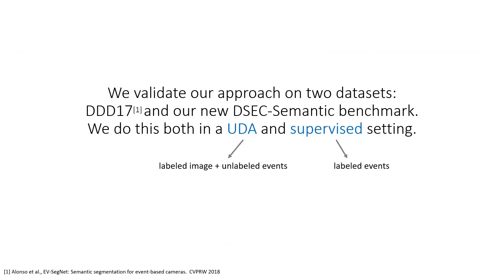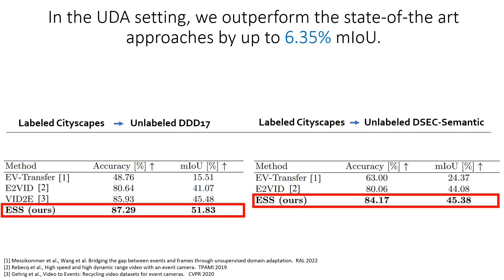We validate our approach for the semantic segmentation task on two datasets: the existing DDD17 and our new DSEC semantic benchmark. In the UDA setting, without access to labeled events during training, our method outperforms state-of-the-art approaches by up to 6.35% mean IOU.